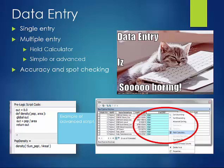If we're looking at population data and we have counties with population data, it might be useful to create a field called population density to calculate the number of people per square mile and put that into a new field. This information could then be pulled in quickly and used to symbolize a map and display information professionally.